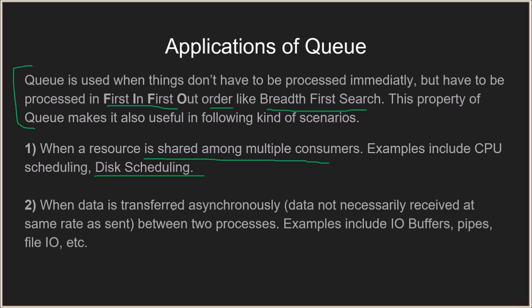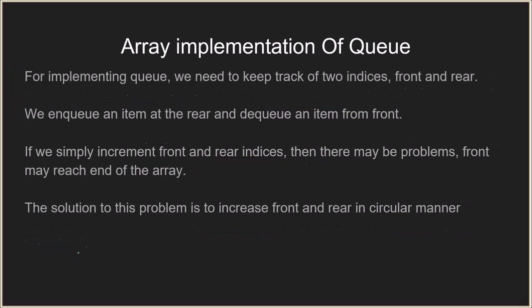Also, when data is transferred asynchronously, data may not necessarily be received at the same rate as it is sent. When it is to be sent asynchronously between two processes — for example IO buffers, pipes, file IO, etc. — queues are used. Let's now come to the implementation.